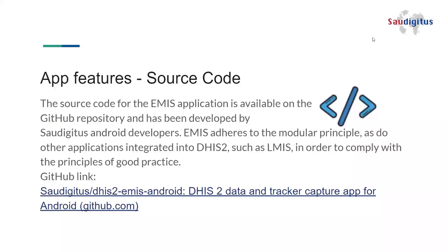Talking about the source code, it can be found on GitHub. We have forked the DHIS2 core capture app repository and created a module into the core to implement EMIS. So EMIS is already integrated with the capture app, and we have a link we can share with you to download the repository and the code, so you can also see how it was developed and how it is structured.